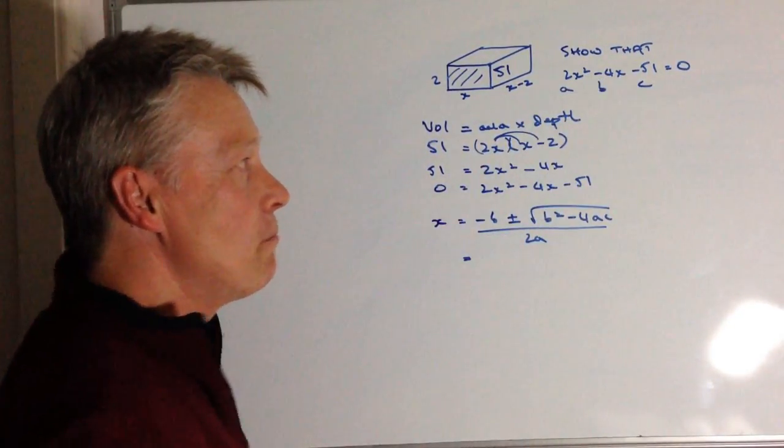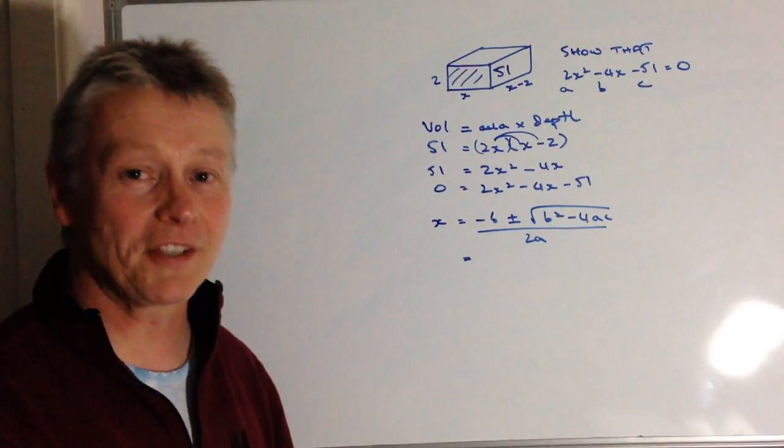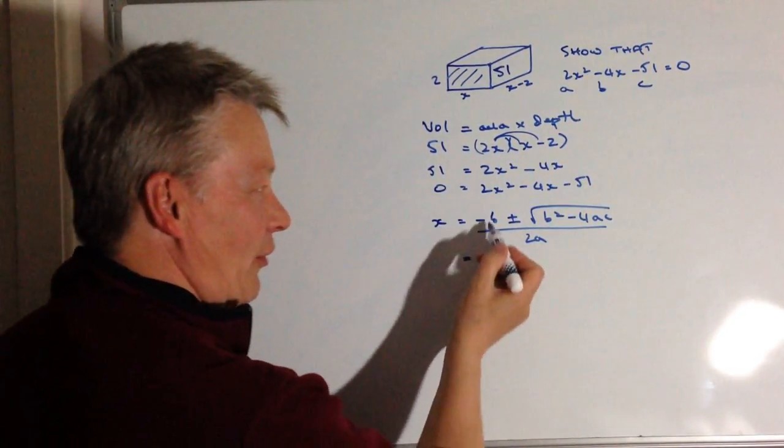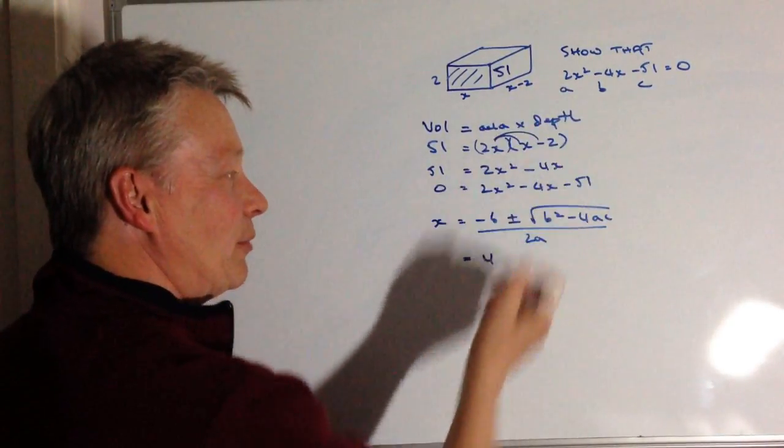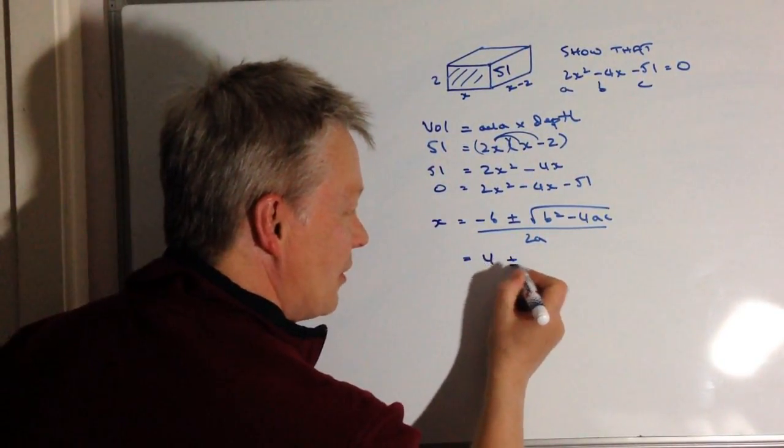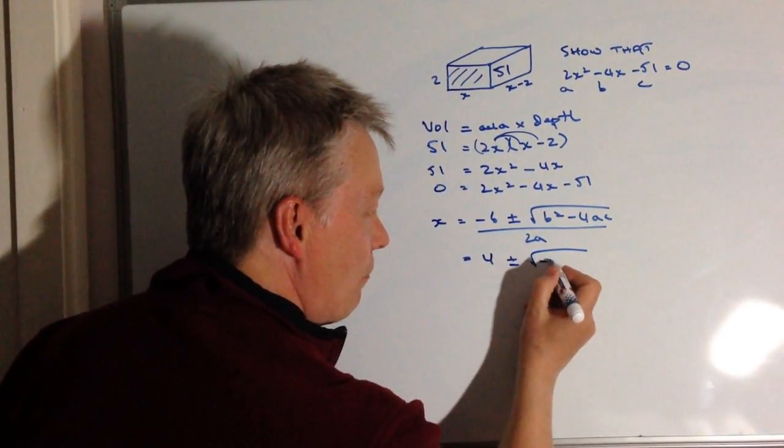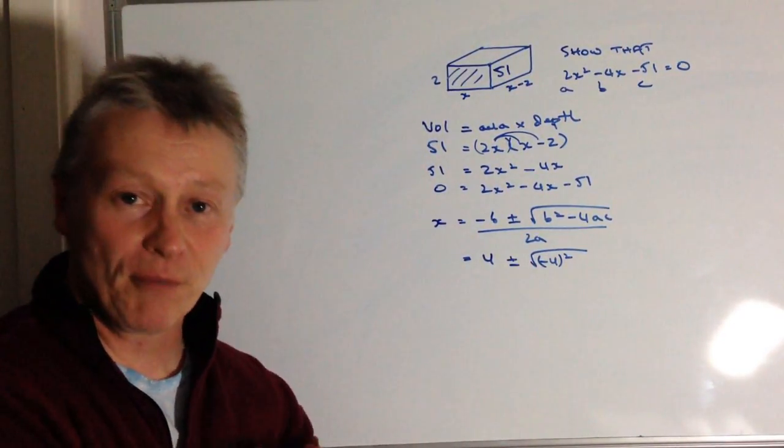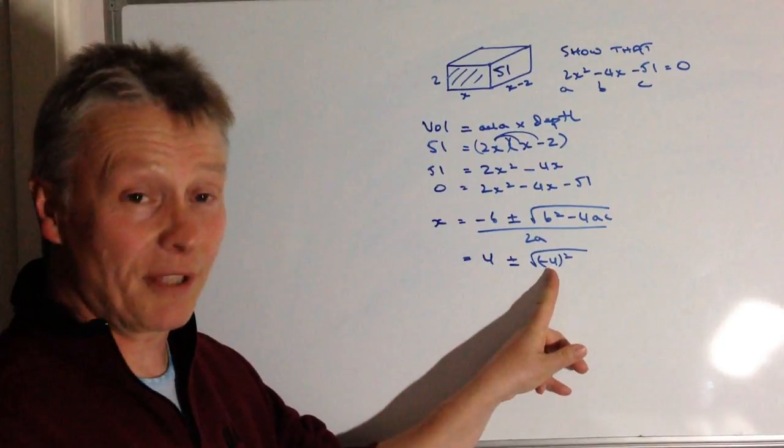Minus b, well it's already minus, a minus and minus is a positive, so actually b is going to be 4. This first value here will be 4. And then it's plus or minus the root of minus 4 squared, and as you remember, minus 4 times minus 4 is 16, so that's going to be 16.